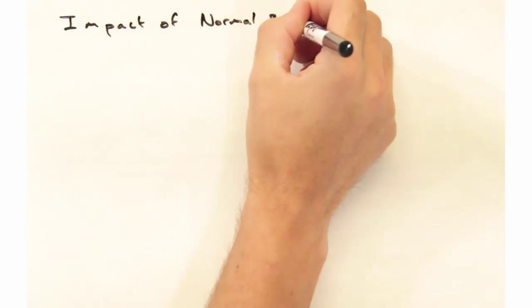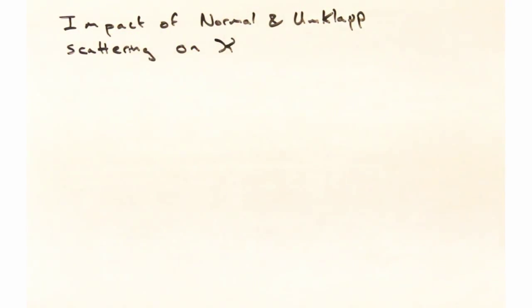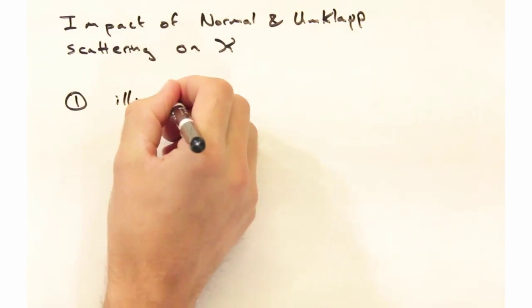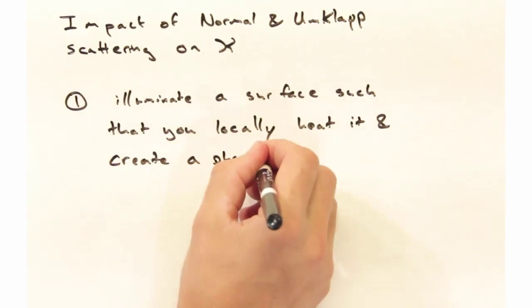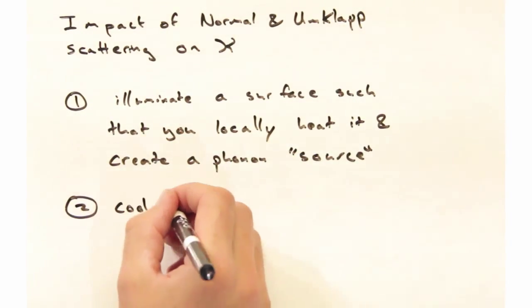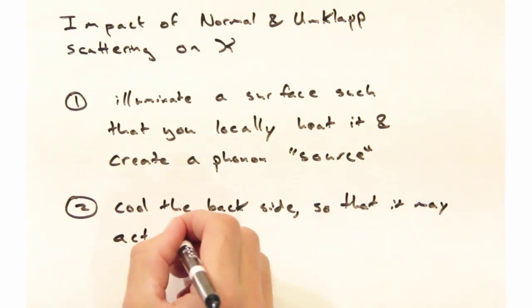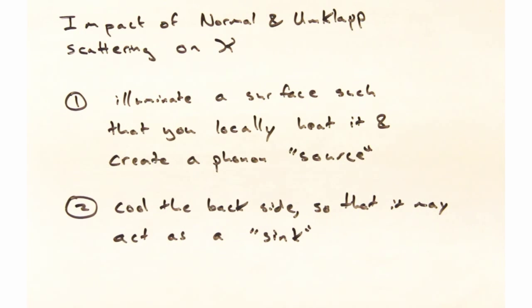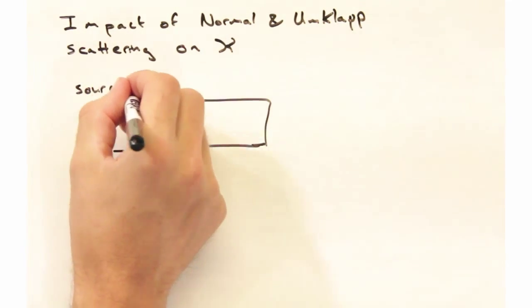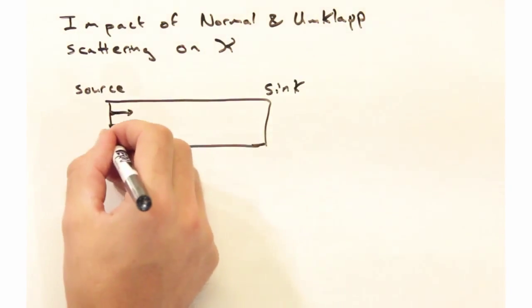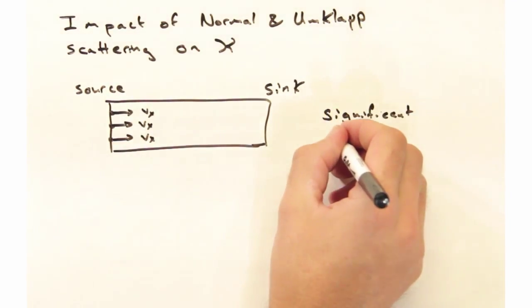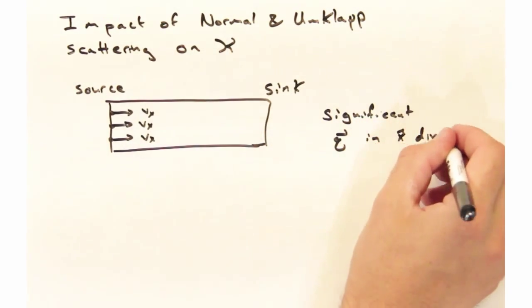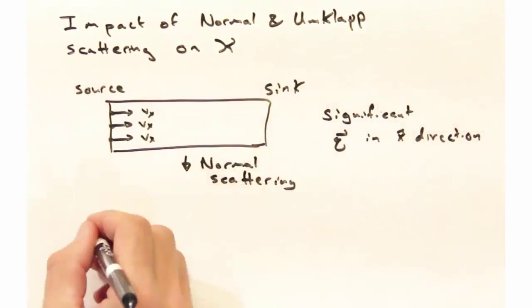Now that we have some understanding of normal and umklapp scattering processes, let's take a look at their impact on thermal conductivity. We're going to start by illuminating a surface with light such that you locally heat it and basically create a phonon source. We should also probably cool the backside so that it's going to act as a sink. We can visually see this in terms of a bunch of phonons coming from this left side, all of which have a positive vx velocity.